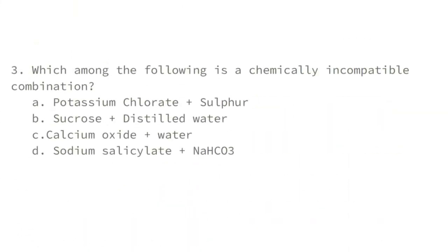Which among the following is a chemically incompatible combination? Potassium chlorate and sulfur is clearly the answer: potassium chlorate is a very powerful oxidizing agent and sulfur is combustible, so a reaction between them would cause an explosion. Therefore, they are chemically incompatible.